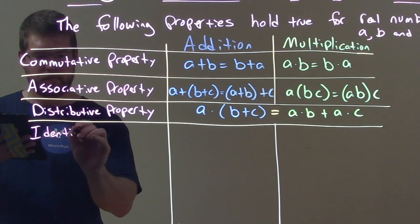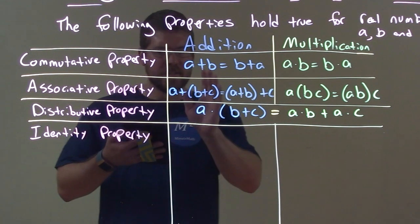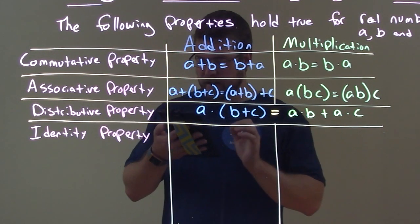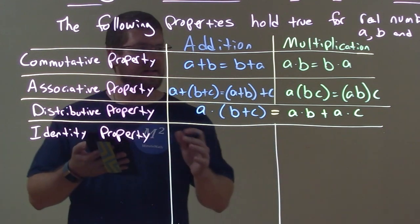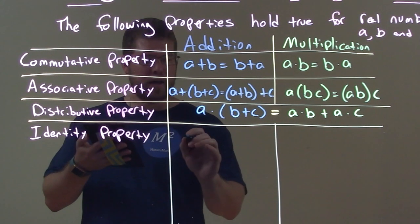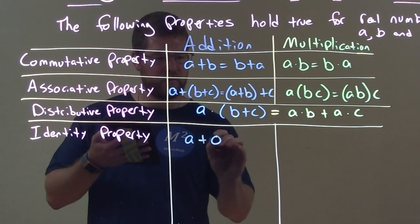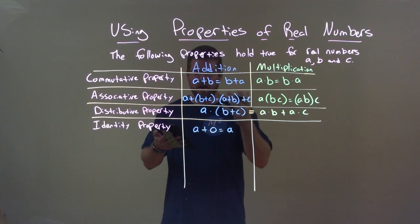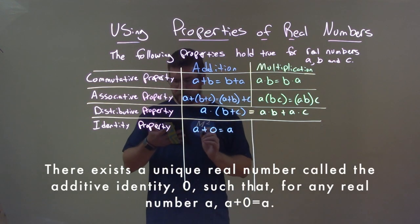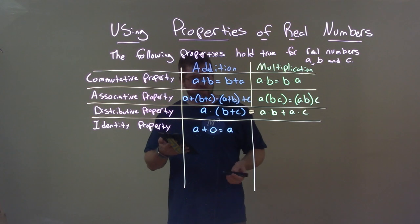We have the identity property. For addition, there exists a unique real number called the additive identity — zero — such that for any real number A, A plus zero equals A. It doesn't change anything when we add it.